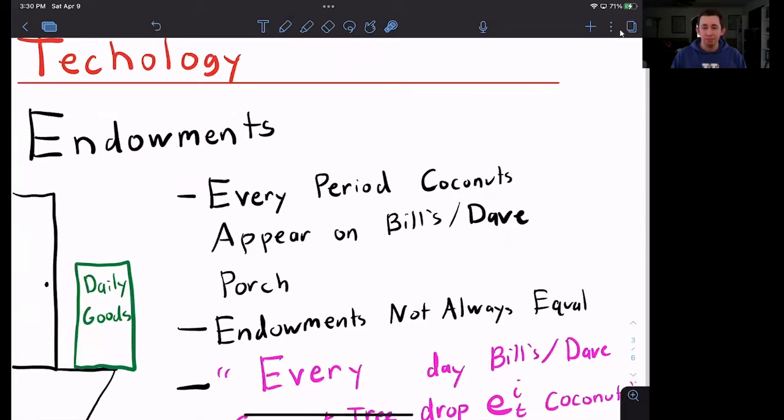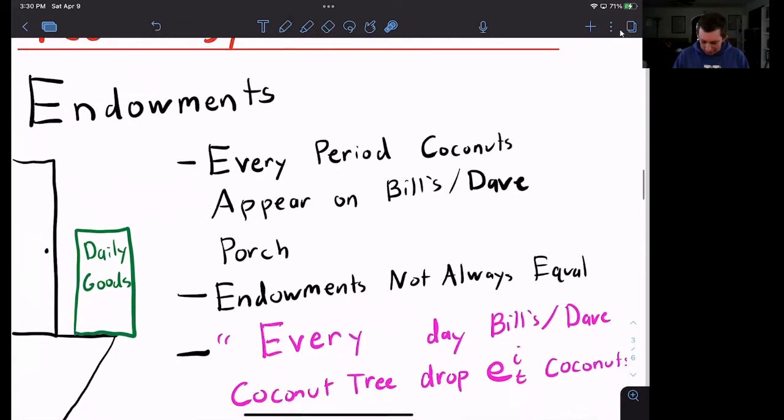In fact, our simple model of an Arrow-Debreu equilibrium is going to have both of those aspects where they're not equal and they're not the same every day. Another way to think about endowments is, since we're talking about coconuts, you can think about it as if Bill and Dave each had a coconut tree outside, and every period the coconut tree dropped a certain number of coconuts on the ground. And Bill and Dave both perfectly know how many coconuts their own tree will drop and how many coconuts each other's tree will drop on any given day.